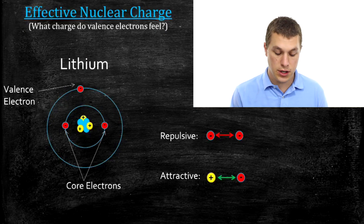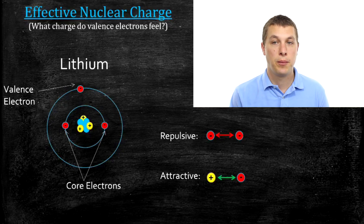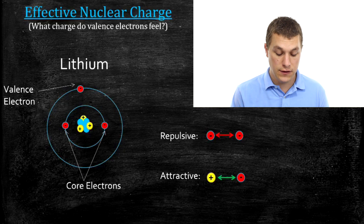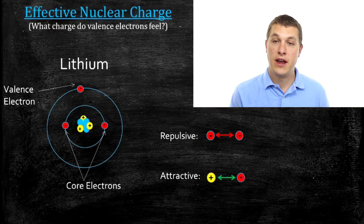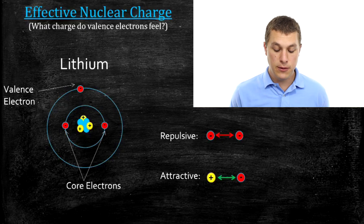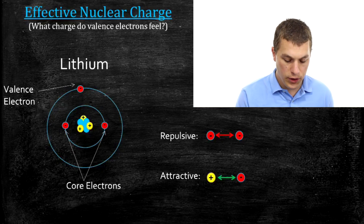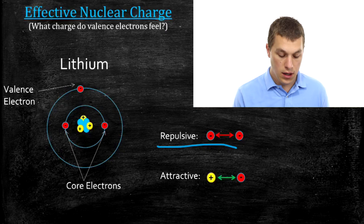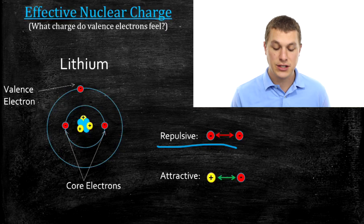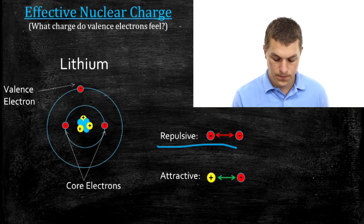So what is effective nuclear charge? What we're thinking about here is what charge is felt by the valence electrons, and the valence electrons are the outermost electrons. We can see here that we have lithium. It has two core electrons — those are in the 1s orbital — and it has one valence electron in the 2s orbital. We're going to have a repulsive force between our electrons, and that means that the core electrons actually repel that valence electron.